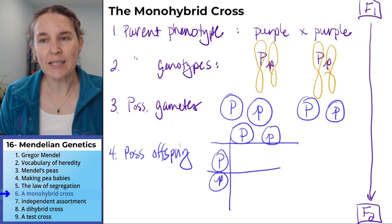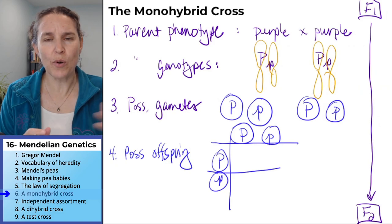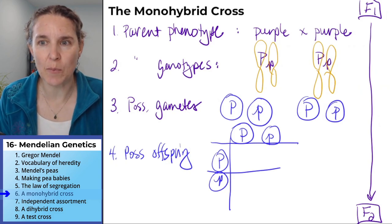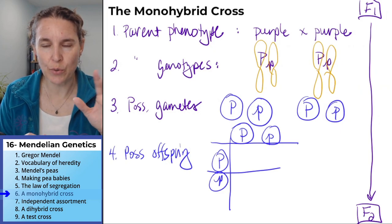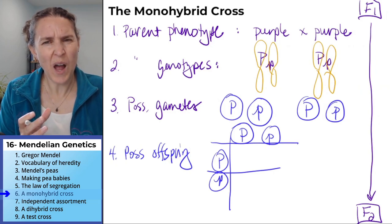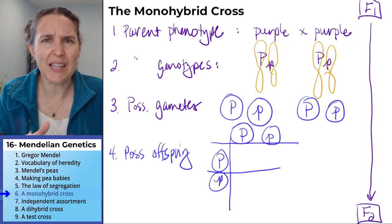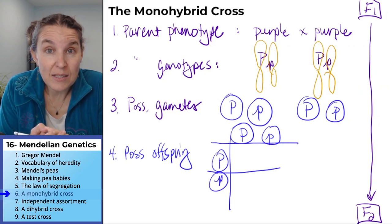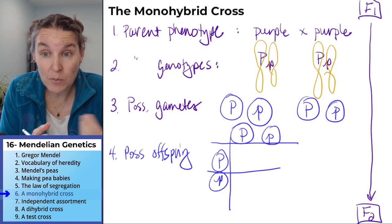There is no reason to put the same gamete twice. Like if, for example, we ended up with two possible gametes that have big P's in them, why bother putting two big P's in there? We're just going to put it in there once because it's all of our possible gametes.